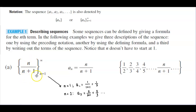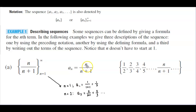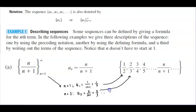For part a, we have the set of n divided by n plus 1 where n equals 1 going to infinity. The defining formula is a subscript n equals n divided by n plus 1. Writing out the terms: when n equals 1, the first term a subscript 1 equals 1 over 1 plus 1, which equals one half. When n equals 2, a subscript 2 equals 2 over 2 plus 1, which equals two thirds. We would continue on to determine further terms of the sequence.